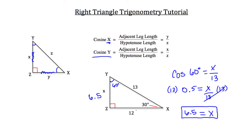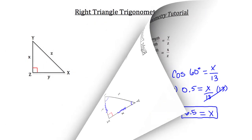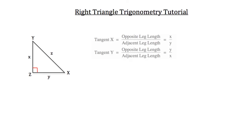Let's take a look at the last trigonometric ratio, which is the tangent function. Tangent states that the tangent of angle x is equal to the opposite leg length of x over the adjacent leg length of angle x. So if this is angle x, what's opposite is side length x, and what's adjacent to that angle is side length y. If you're referring to the tangent of angle y, what's opposite that angle is side length y and what's adjacent is side length x.